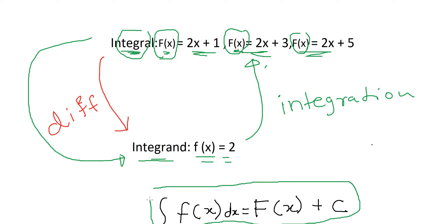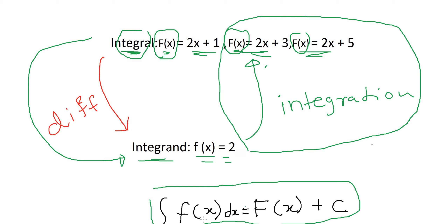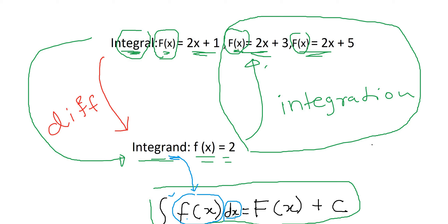This idea is captured by the integration symbol. Please understand all the information we just discussed — the integration part is captured by this simple symbol. The symbol tells us we are integrating: this sign, similar to an S, is called sigma and is the sign for integration. We are integrating the integrand, small f of x, with respect to x — that is why we have written dx.